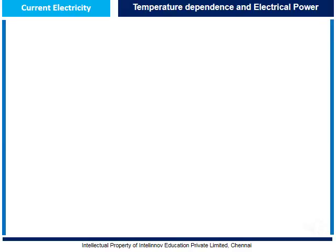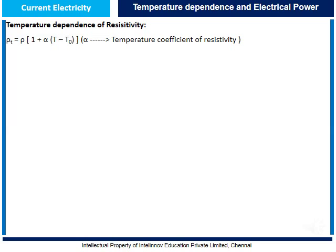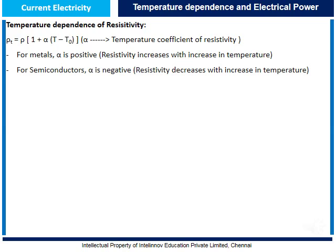Now let us understand temperature dependence of resistivity. Resistivity at a particular temperature is given by rho equal to rho naught into (1 plus alpha times (T minus T naught)), where alpha is the temperature coefficient of resistivity and its value differs for each material. For metals, alpha is positive — resistivity increases with increase in temperature. For semiconductors, alpha is negative — resistivity decreases with increase in temperature.